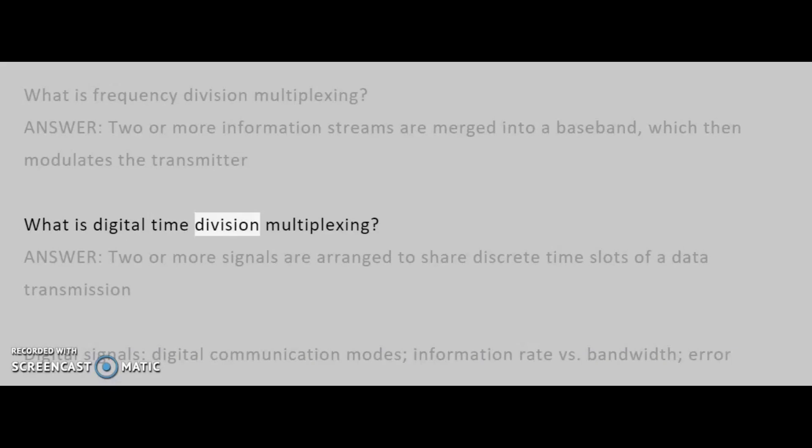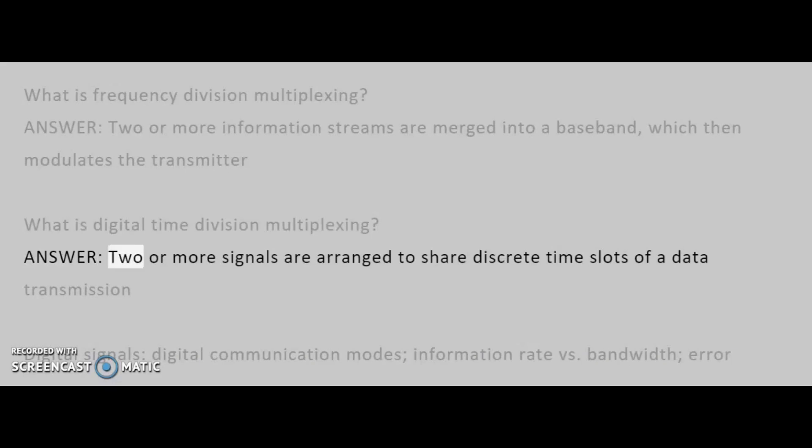What is digital time division multiplexing? Answer: Two or more signals are arranged to share discrete time slots of a data transmission.